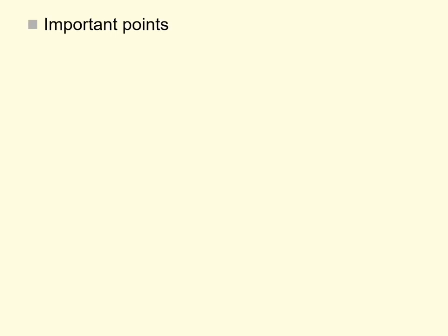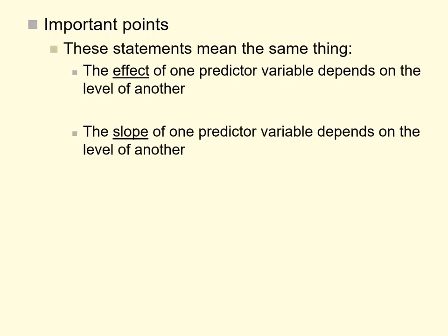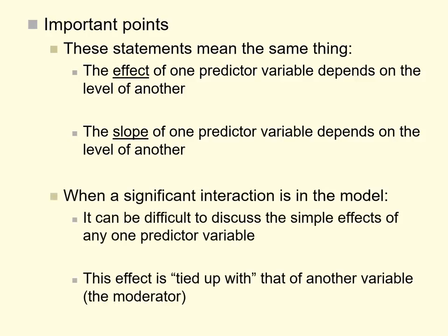To summarize some important points: these following statements mean the same thing — 'the effect of one predictor variable depends on the level of another predictor variable' and 'the slope of one predictor variable depends on the level of the other predictor variable.' Whether described in words or pictographically with a graph, the slope describing the relationship of one predictor variable and the outcome variable changes — it's steeper or shallower at different levels of the other predictor variable. When a significant interaction is in the model, it becomes difficult to discuss the simple effects or main effects of any one predictor variable.